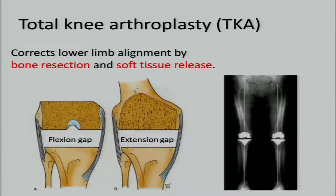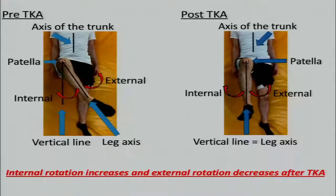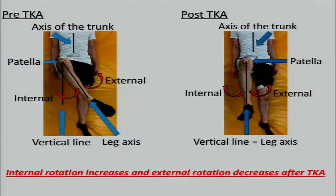Total knee arthroplasty is one of the successful treatments for knee OA. The lower leg alignment is corrected by bone resection and soft tissue release. The varus position of the lower leg axis is corrected, and it is assumed that internal rotation increases and external rotation decreases after TKA.